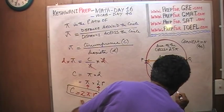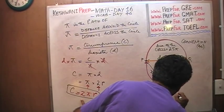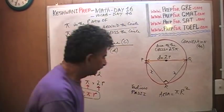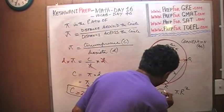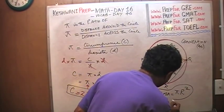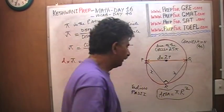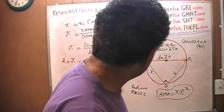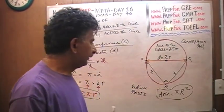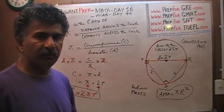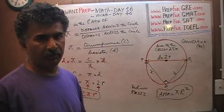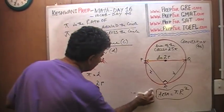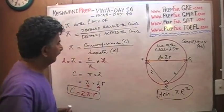Then the area must be πr². How else can you keep straight that the area must be the one with the square in it? I'll explain that in a second.